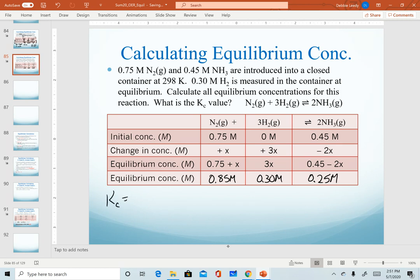Our last step is to write our equilibrium expression. We didn't need this to solve the first part of the problem, but we do need it now. Products over reactants, coefficients are the exponents, and now I can plug in all of my known quantities.